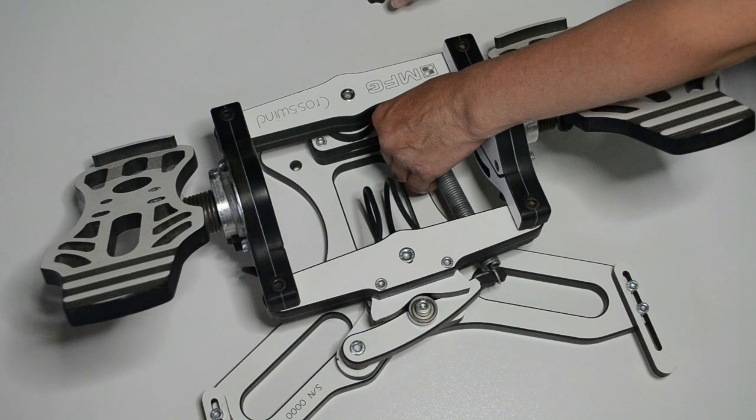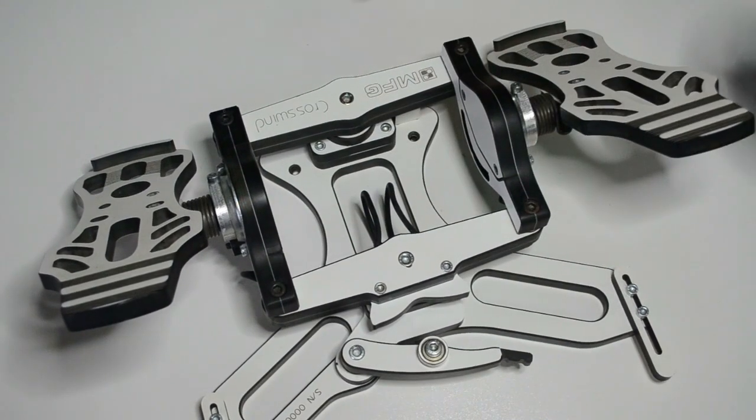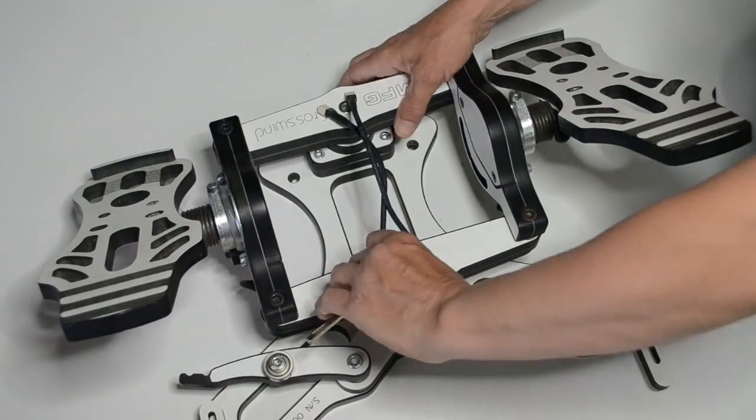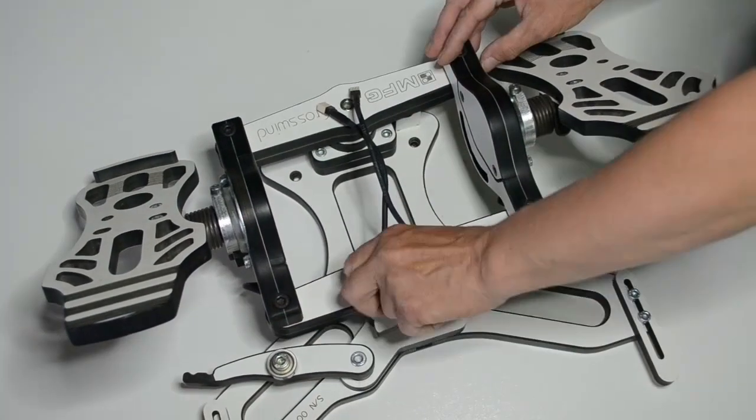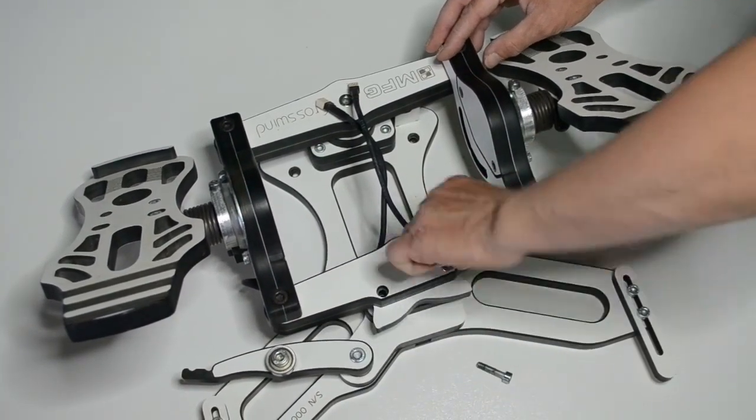First we remove mainspring, then unplug braking cables, then unscrew and remove cam profile.